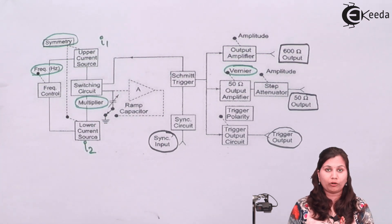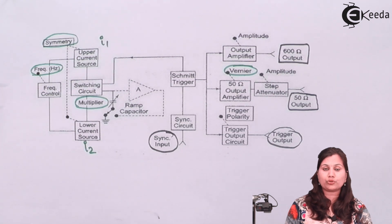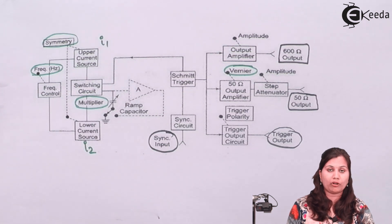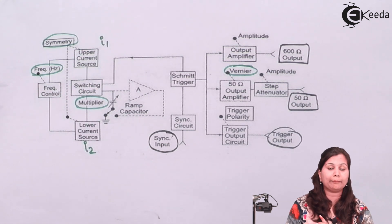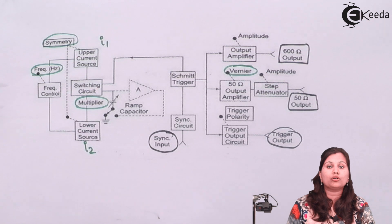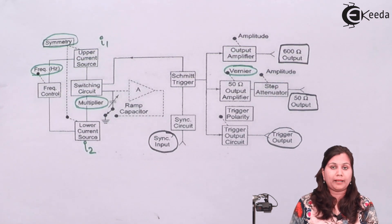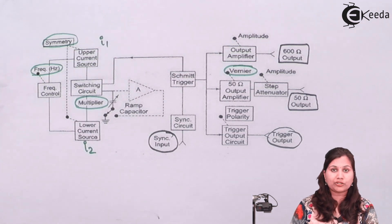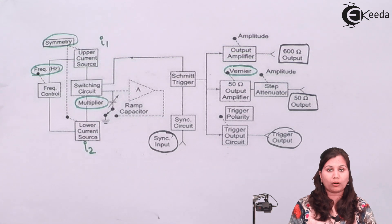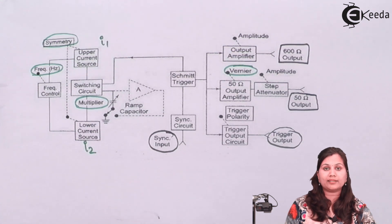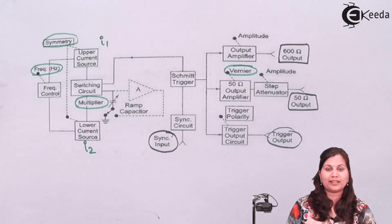The pulse generator is used to generate rectangular pulses and is also used with an oscilloscope — cathode ray oscilloscope — as a measurement device. If we want to measure the amplitude, rise time, fall time, and time period of the pulses, we can do that with the help of the pulse generator. In this video we studied the pulse generator: its use, applications, working principle, block diagram, and the functions of various blocks. I hope this topic is now clear to you. Thank you.